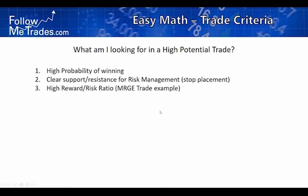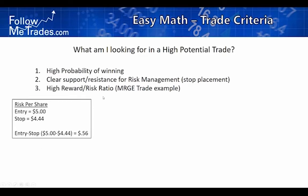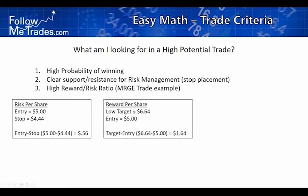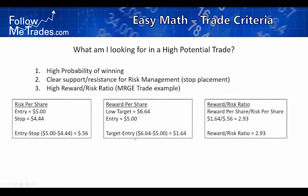In a high-probability trade, I want a high probability of winning, clear support and resistance areas for stop placement, and a high reward-to-risk ratio. I won't take a trade that at the outset has the chance to lose more than it can make. The math works way better if your winners are bigger than your losers. I calculate risk per share as entry minus stop, and reward per share using a conservative Fibonacci extension target. For example: risk $0.56, reward $1.64 — that's a 2.93 reward-to-risk ratio. I'll take that every day.